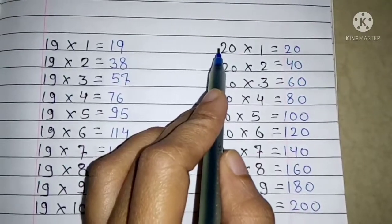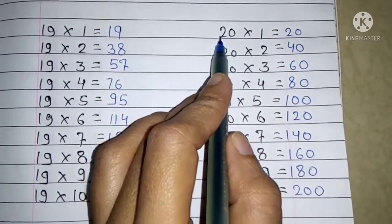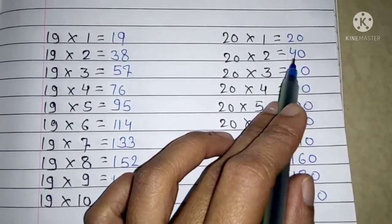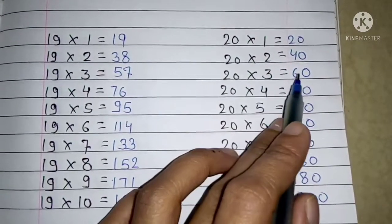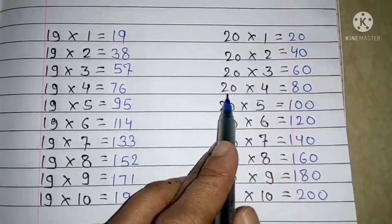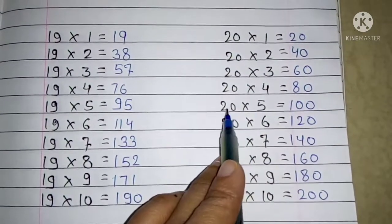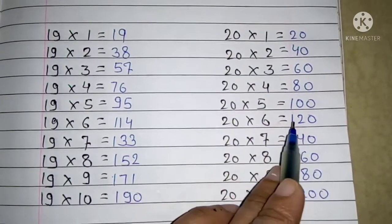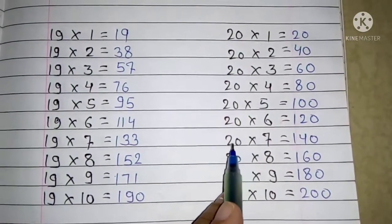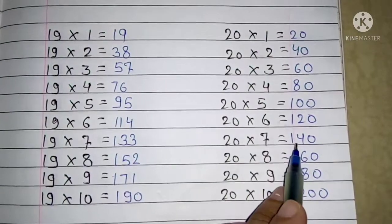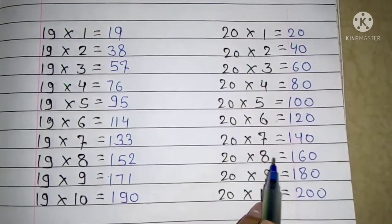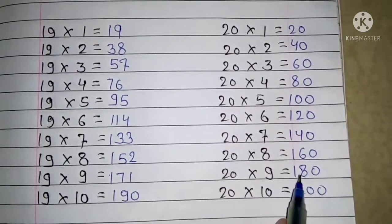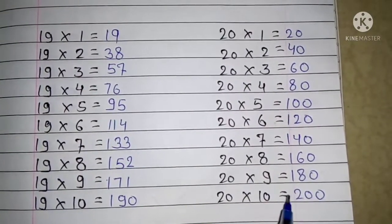Next table 20: 20 ones are 20, 20 twos are 40, 20 threes are 60, 20 fours are 80, 20 fives are 100, 20 sixes are 120, 20 sevens are 140, 20 eights are 160, 20 nines are 180, 20 tens are 200.